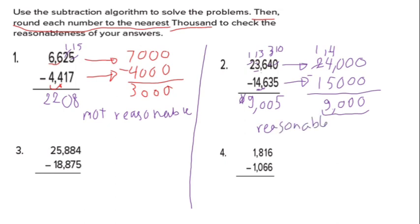Question number 3. Round to the nearest thousand — as agreed, if the question asks for rounding to a specific place value (hundred, thousand, ten thousand), we follow what is asked. Here it asks for thousands. The thousands digit is 5; ask 8 — give or not give? Yes, because 8 is a rich number. So it becomes twenty-six thousand. And here 8 asks 8 — give? Yes, rich number. So it becomes nineteen thousand.